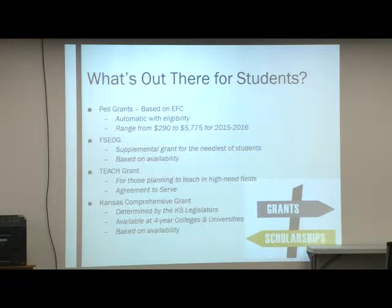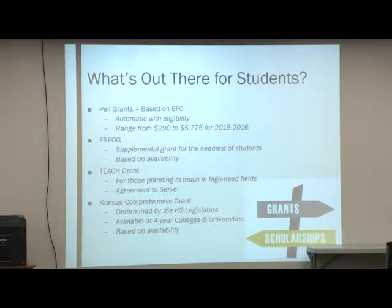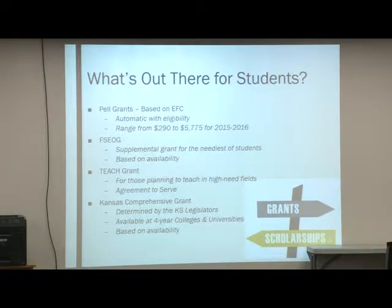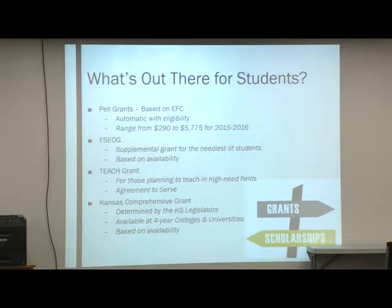Looking at types of aid, we break this into two categories: gift aid and self-help aid. Gift aid is the best kind — it's free aid that doesn't have to be paid back, like scholarships and grants. Self-help aid is aid that either has to be earned or paid back, so that would be loans or employment. The sources include the federal government, which provides probably the largest source of financial aid for students; states that provide some state aid; colleges and universities, usually in the way of scholarships or grants; and private sources such as civic organizations, churches, and employers.